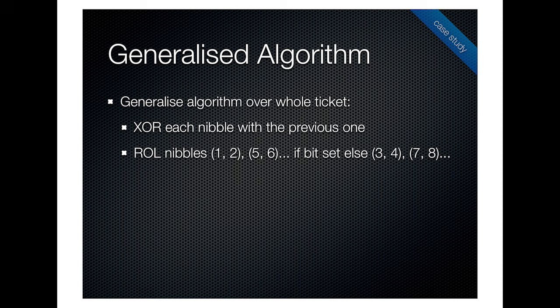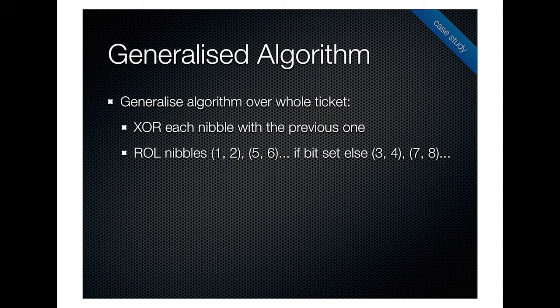In our case, we generalised the algorithm over the whole ticket. Applying it to all the tickets we'd seen, we had way too many edge cases — random numbers like 10, 12, 24 at apparently random locations throughout the ticket. We also noticed that sometimes we XORed two nibbles right next to each other, which didn't make sense because you'd just have a piece of data being wasted. So rather than XORing with random positions, we XORed each nibble with the one next to it. This was pretty cool because it ended up producing a generalised algorithm. We also looked at the rolled nibbles, which were based on a certain bit.